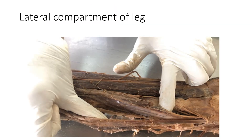This is the lateral compartment of leg, which is supplied by the superficial peroneal nerve. Here you will have two tendons — peroneus longus and peroneus brevis. 'Peroneal' means fibula, so these two muscles are present in the lateral compartment of leg, and both are supplied by the superficial peroneal nerve.